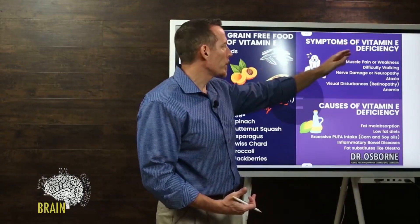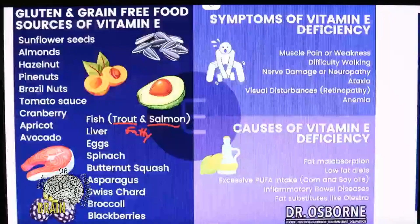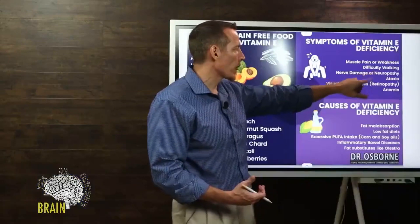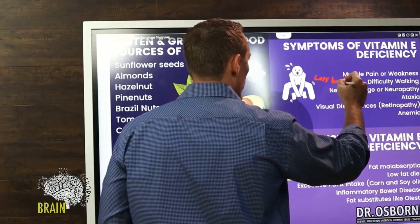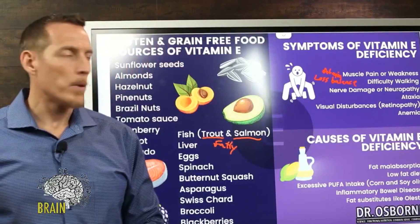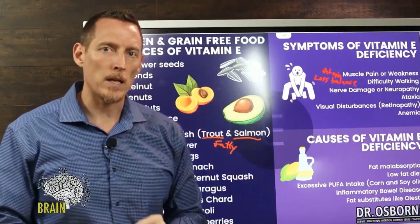Now let's look at symptoms of vitamin E deficiency. Some of these are super common symptoms, like muscle pain and muscle weakness — some of the most common reasons why people go to see a doctor. Additionally, difficulty walking, which can be construed as a loss of balance. Some people refer to this as ataxia, and if you've been diagnosed with cerebellar ataxia, that's a cue to ask your doctor to test you for a vitamin E deficiency.